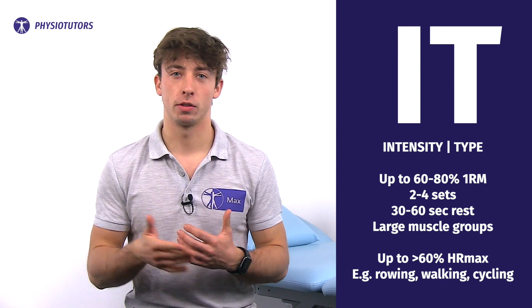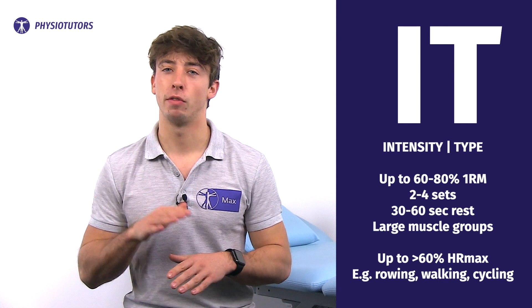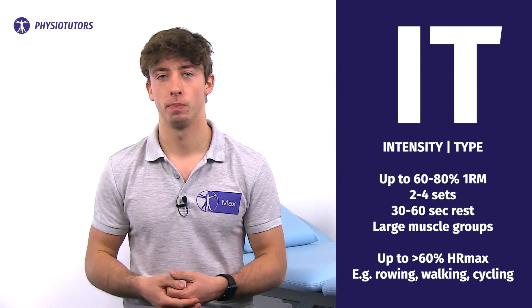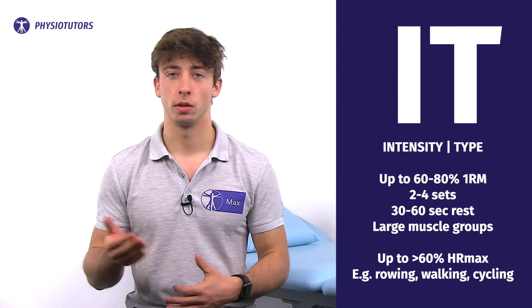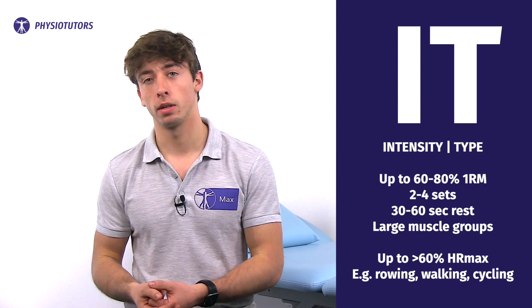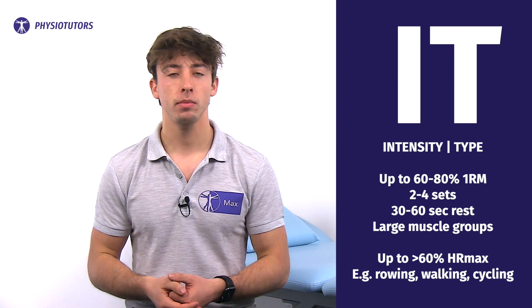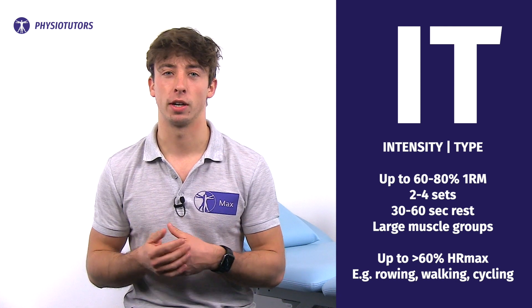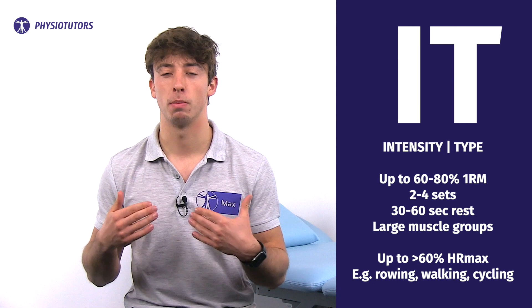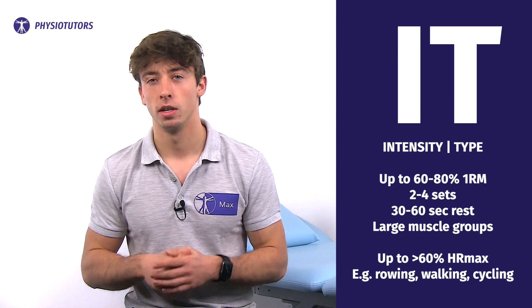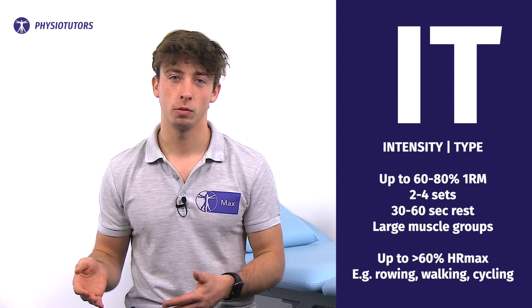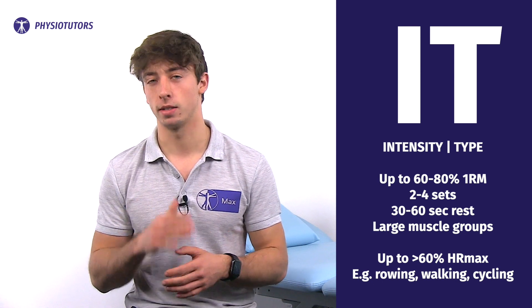In terms of aerobic training, start exercising at 40–60% of the maximum heart rate and progress to 60% and above. Examples include rowing, walking, cycling, swimming, or a cross-trainer. Gradually increase both aerobic exercise and strength training to a maximum level for your patient. If joint pain increases for more than two hours after the workout, consider scaling down the intensity.